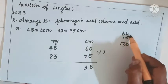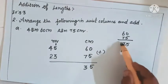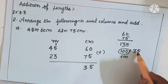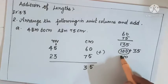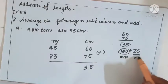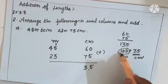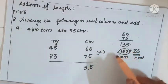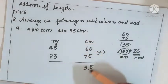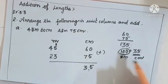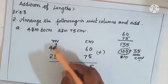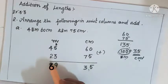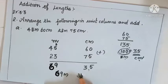60 plus 75 is 135. You can split this as 100 plus 35. The 100 centimeters becomes 1 meter, and 35 is centimeter. So 35 centimeter stays here, and that 1 meter carries over. So 1 plus 5 is 6, 6 plus 3 is 9, 4 plus 2 is 6. The answer is 69 meters and 35 centimeters.